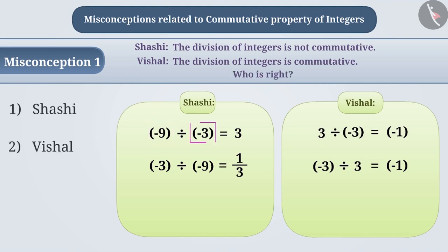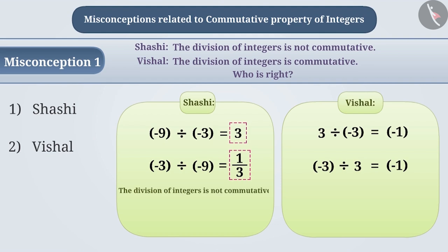Shashi obtained the result 3 by dividing minus 9 by minus 3. By changing the order and dividing minus 3 by minus 9, she got the result 1/3. Seeing the results of both, Shashi was right that the results are not equal. Hence, the division cannot yield the same answer if the order is changed. That is, division is not commutative.